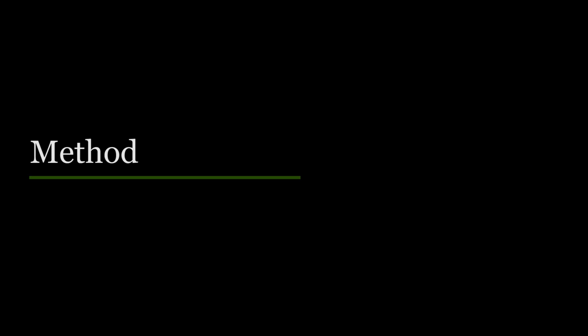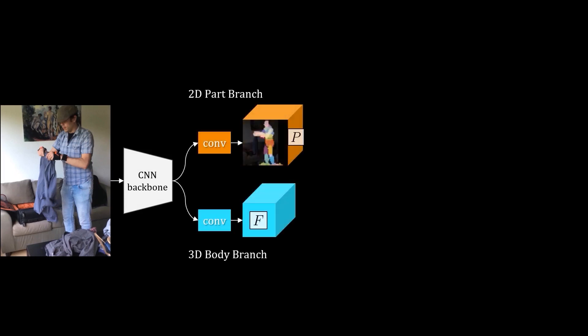Based on this analysis, we design PEAR with a novel attention mechanism to make direct regression approaches more robust to occlusion. Given an image, PEAR can extract image features using a CNN backbone. Then we obtain two high-resolution feature volumes from two different branches: the first is a 2D part branch, while the other is a 3D body branch. By treating the 2D part branch as soft attention weights, we can formulate a body part-driven attention mechanism.